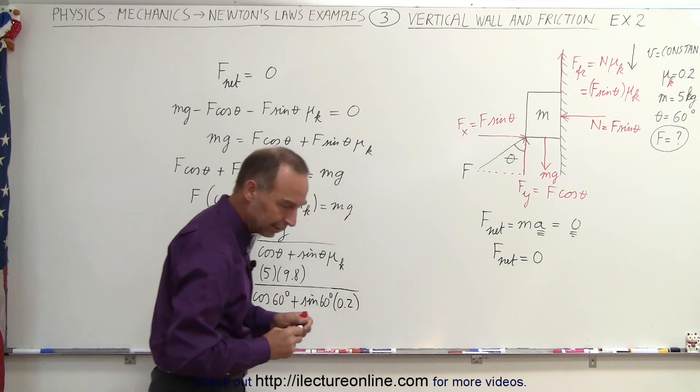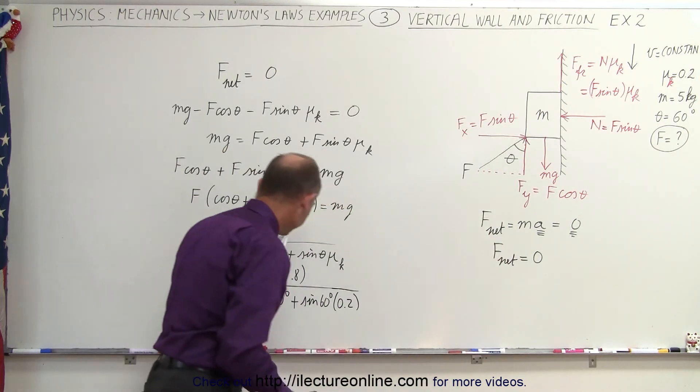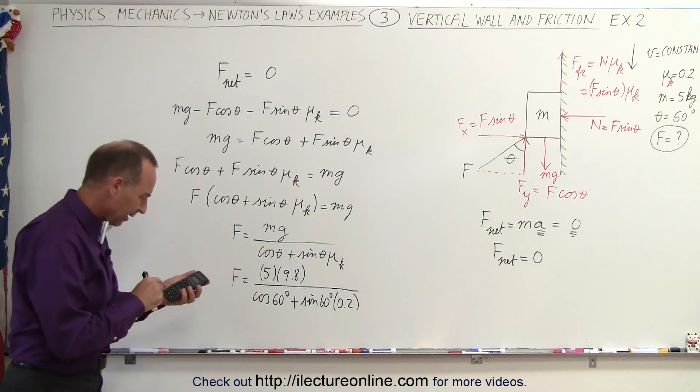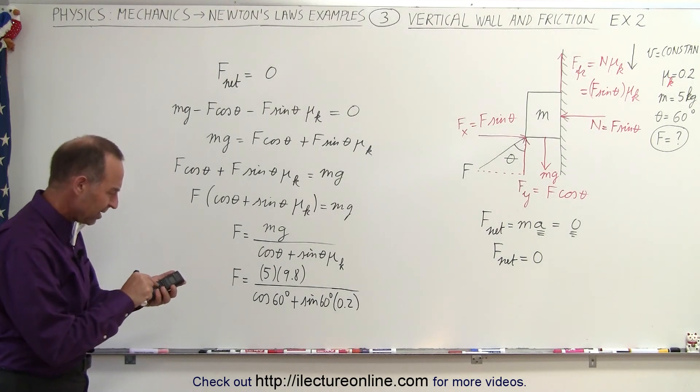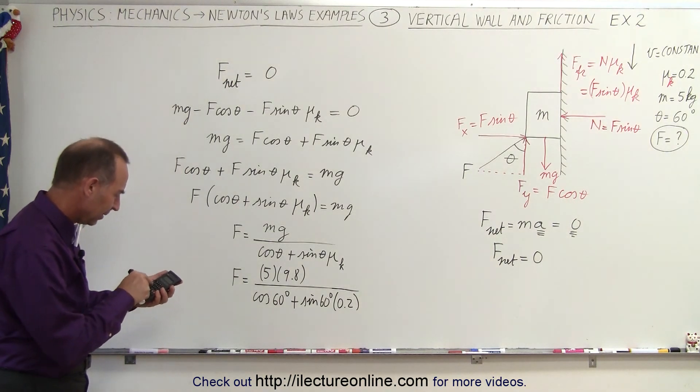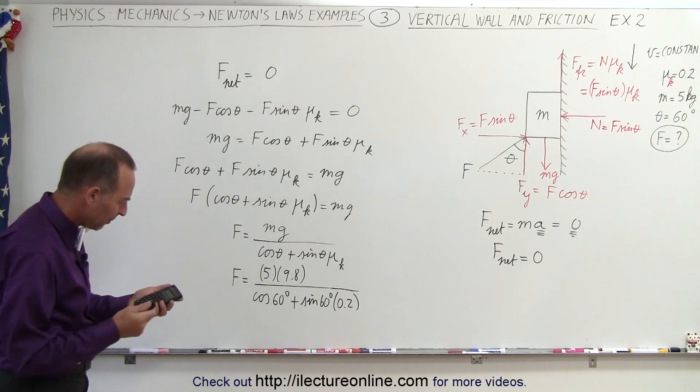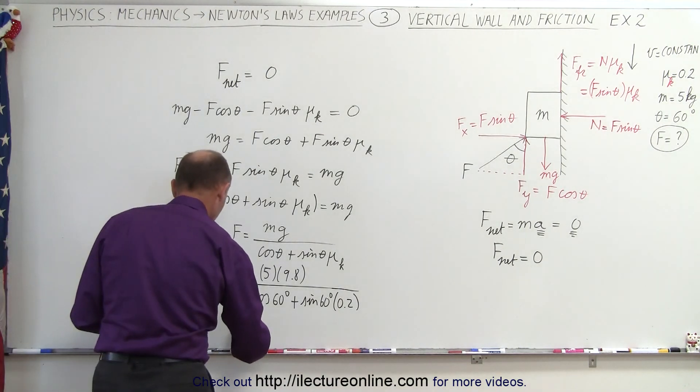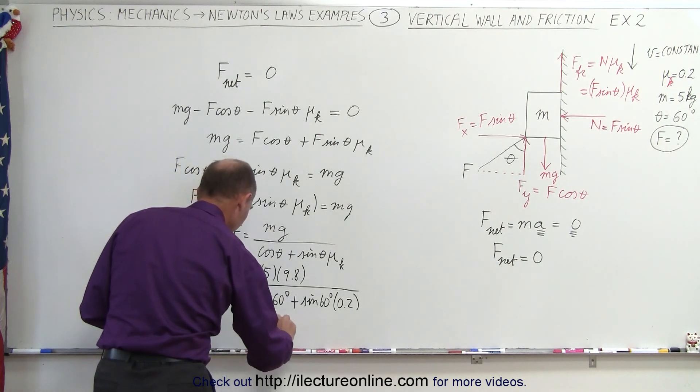And with a calculator, let's find out what that's equal to. So we have, take the sine of 60 times 0.2, add that to 0.5, and then take the inverse of that and multiply it times 49, and that gives us about 73 newtons. So f is equal to 73 newtons.